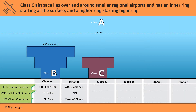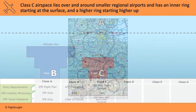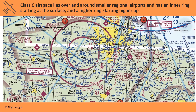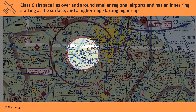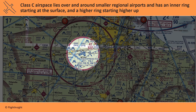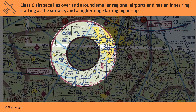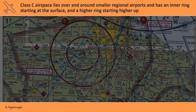Class C airspace lies over and around smaller regional airports and has an inner ring starting at the surface and an outer ring starting higher up. It looks like an upside-down wedding cake too, just like Bravo, but with only two tiers — C for cheap. The entry requirements are to establish two-way radio contact with approach control, though no clearance is needed. Toledo Airport here is a smaller regional airport. The two solid magenta circles indicate the Class C airspace. The inner ring starts at the surface and goes up to 4,700 feet MSL, and the outer ring starts at 2,000 MSL and goes up to the same 4,700 MSL. Pilots should contact approach if entering the airspace, and the frequencies to contact are listed on the sectional.